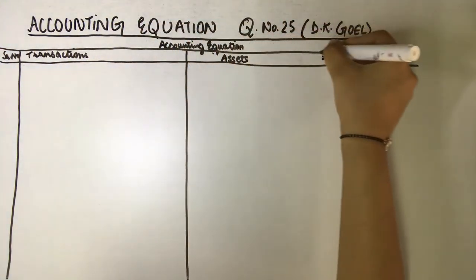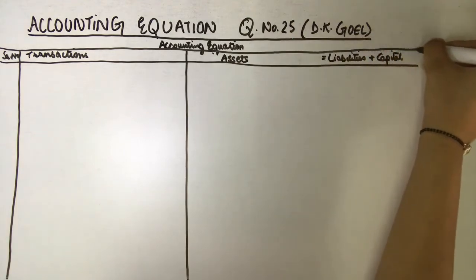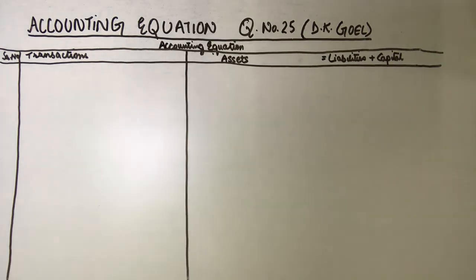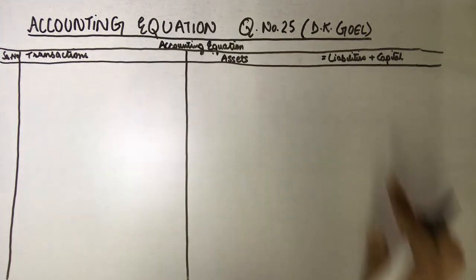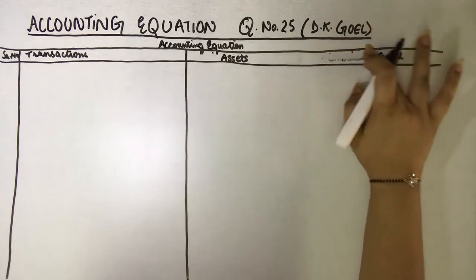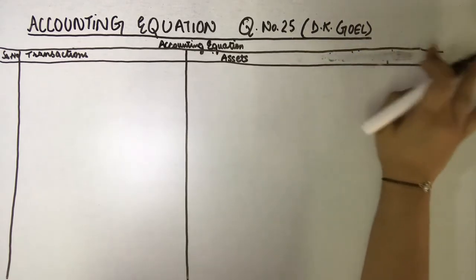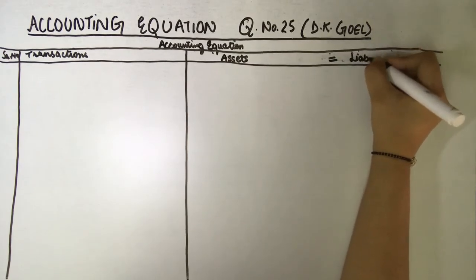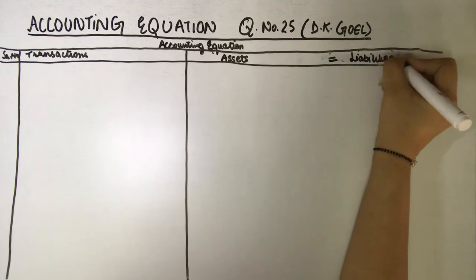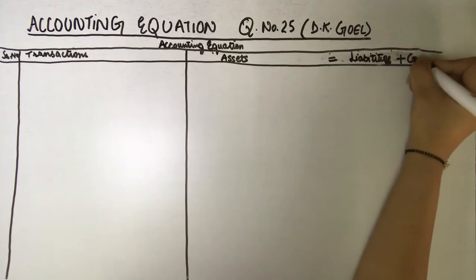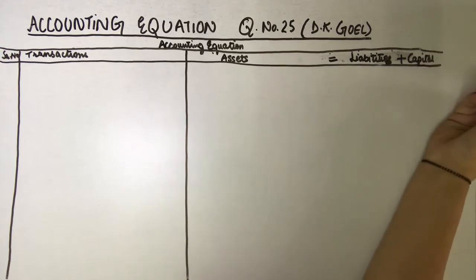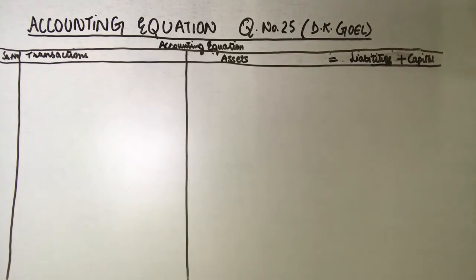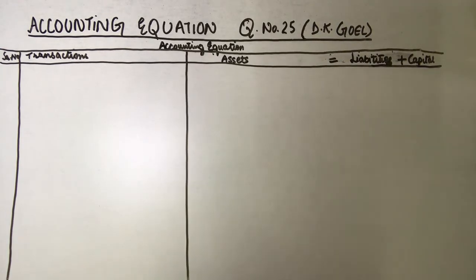When you make the format, use proper pencil and scale — lines should be straight in your notebook. We start now. In this question, we are having many assets, so asset equals to liabilities plus capital. Since many assets will come, we will give more space accordingly.